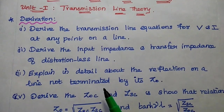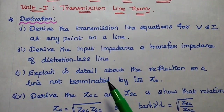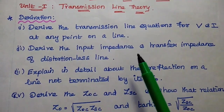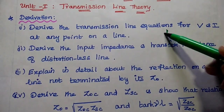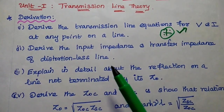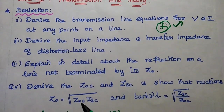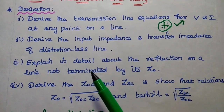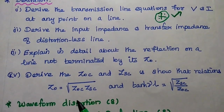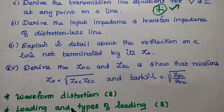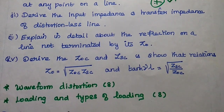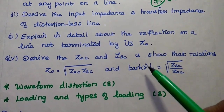So here we can expect the questions as derivative ones. Derive the transmission line equations for voltage and current at any point on a transmission line. This question is very important and we can expect it in university examination. Also, derive the input impedance and transfer impedance of the distortionless line, and explain the concept of reflection on a line which is not terminated by its characteristic impedance.